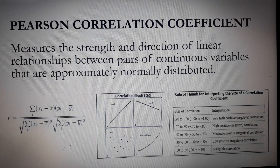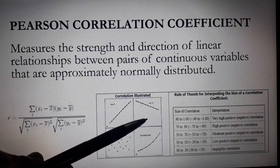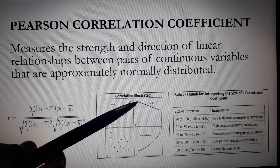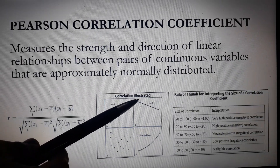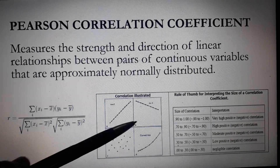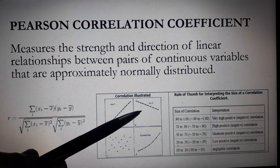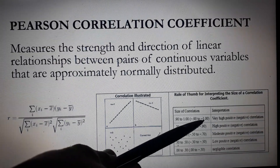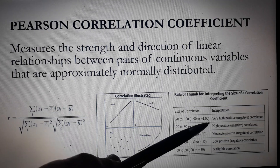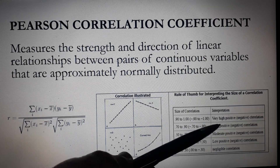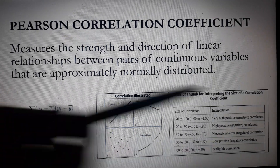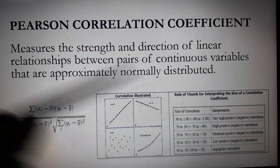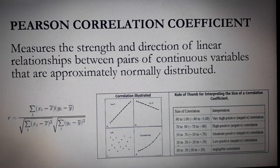Now let's consider the second scatterplot. This time, the resulting line is a straight line sloping downward to the right. So R is equal to negative 1, which can be interpreted as very high negative correlation. This means that as X increases, Y decreases proportionately.